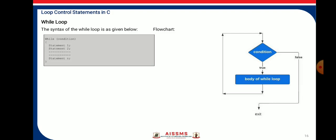Next is the loop control statement in C. The first one is the while loop. Its syntax is: while (condition) { statement 1 to n; }. The while loop is also known as the entry loop because the condition is tested first, then the statements under the body of the while loop are executed. If the condition is false the very first time, the statements under the while loop will not execute even once. Here is the flowchart for the while loop.